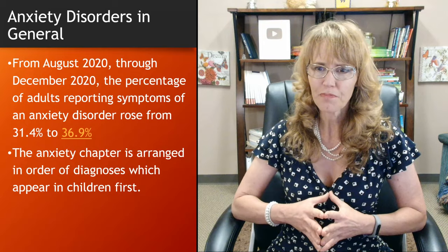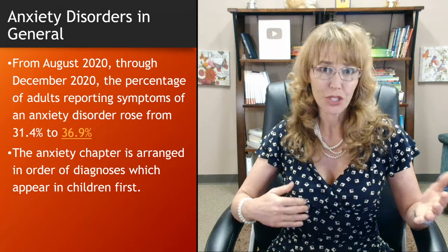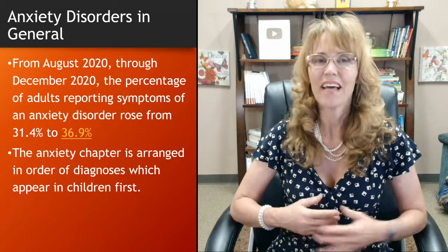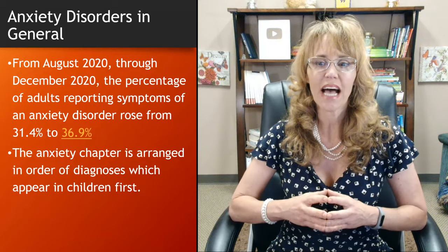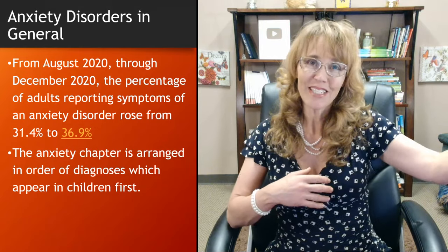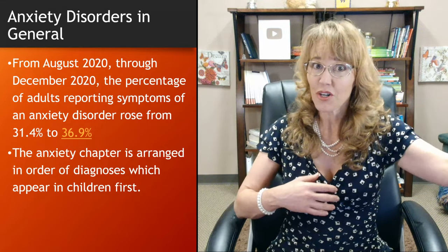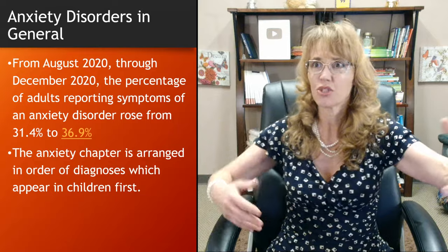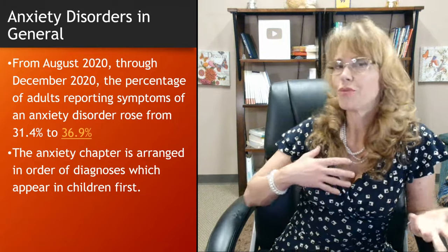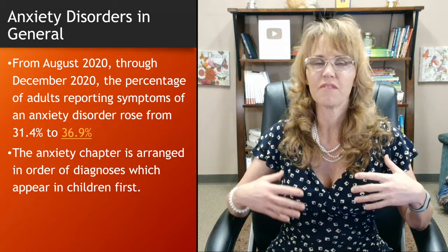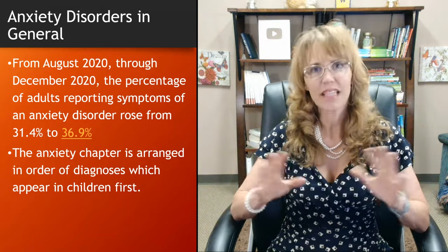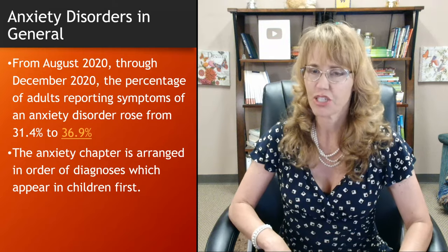The anxiety chapter in the DSM-5-TR, just like in the DSM-5, is arranged in order of diagnoses that appear in children first. So separation anxiety disorder appears first and generalized anxiety disorder is further down — whereas you might expect the more common disorders to come first, but that's not how the DSM is arranged.